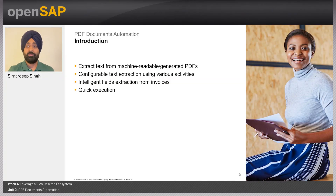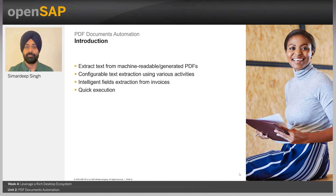Intelligent RPA 2.0 introduced PDF SDK, which allows you to extract data from documents with the help of user-friendly and convenient activities. It's part of the Cloud Studio and can extract text from machine-readable or generated PDFs. These activities are easily configurable and designed with a low-code, no-code approach. Apart from extracting information using configurable parameters, fields from invoices can be extracted intelligently. The best part of PDF SDK is that it has quick execution.